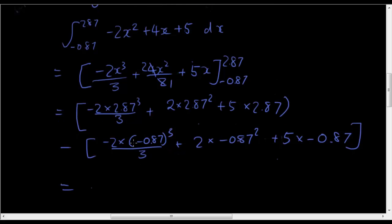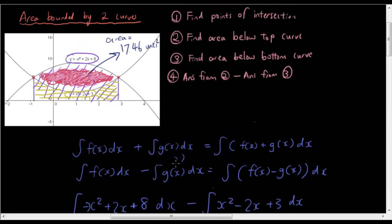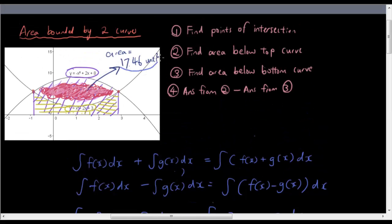And then now when I put all this in the calculator, I get 15.06 minus negative 2.3972, which gives me 17.46 again, unit squared,